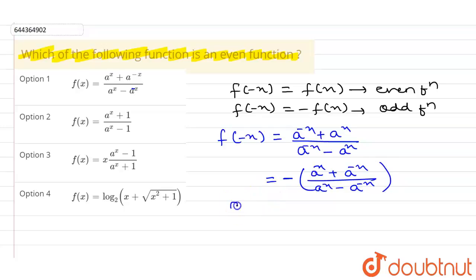So f(−x) = −f(x), which means this is an odd function — not even.